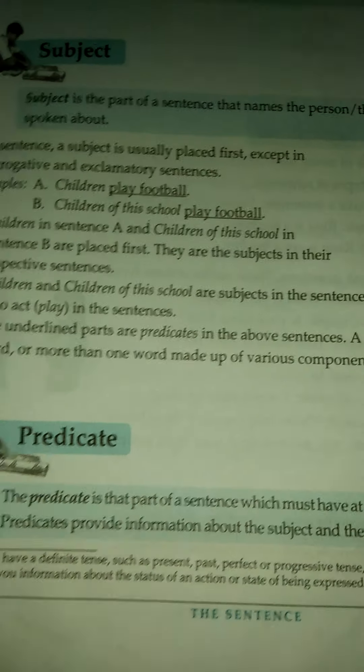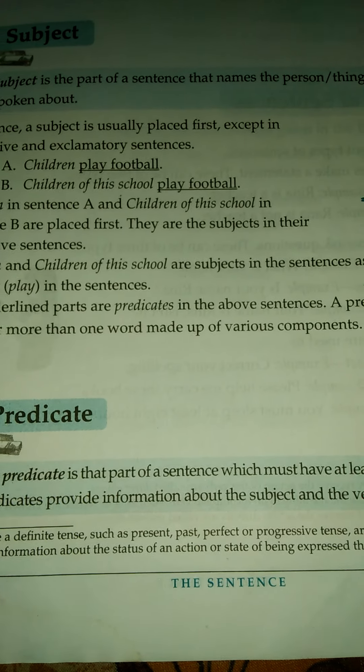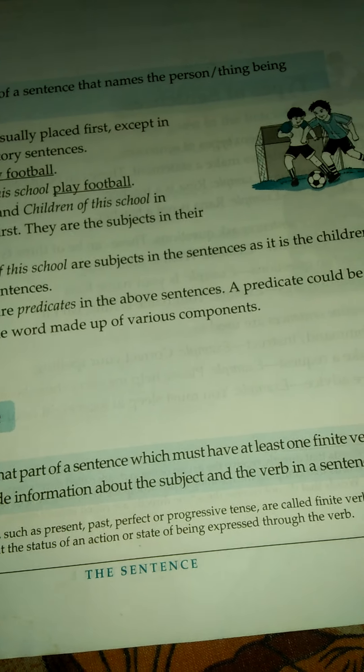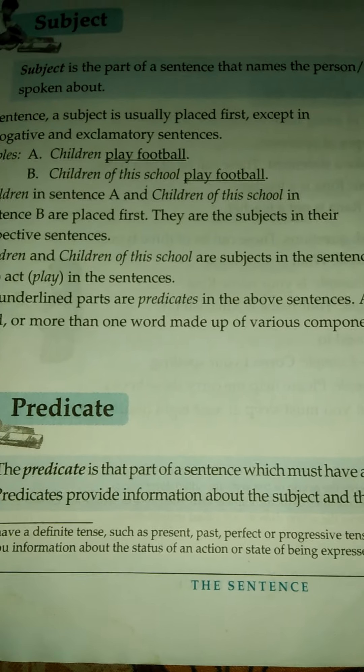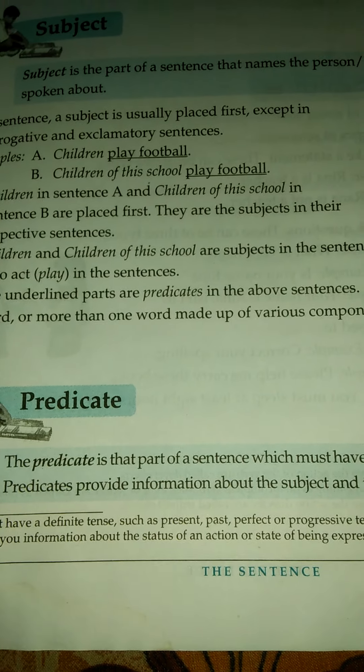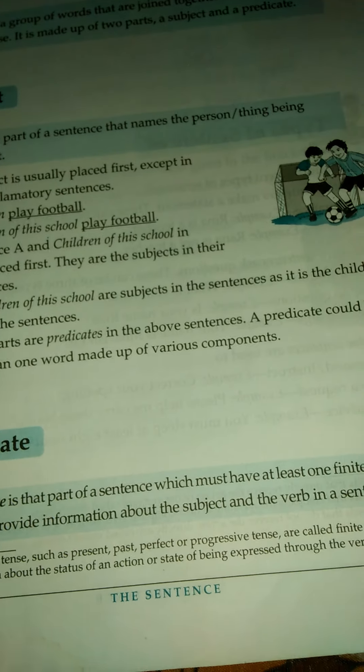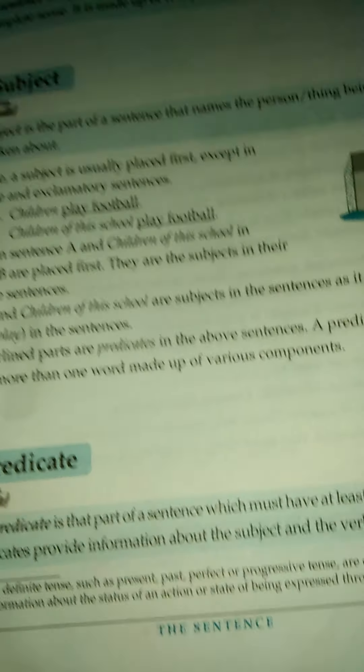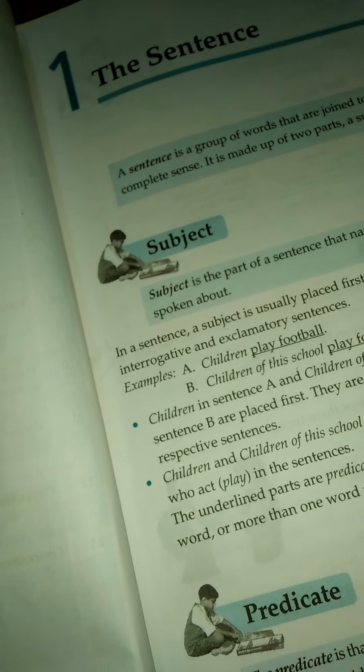Now predicate. The predicate is the part of a sentence which must have at least one finite verb. Predicates provide information about the subject and the verb in a sentence. As for example,